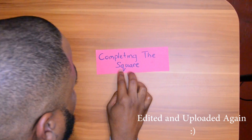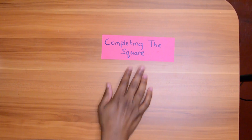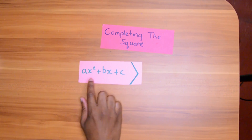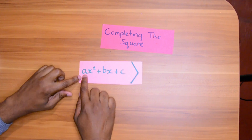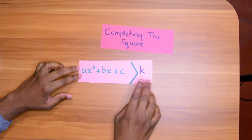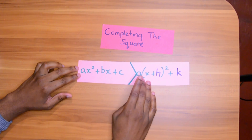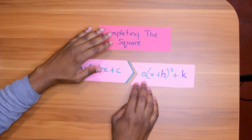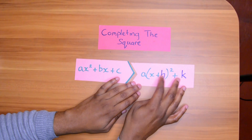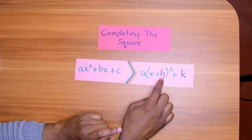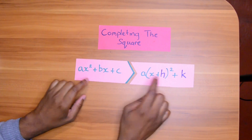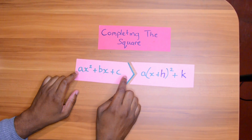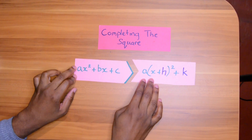Let's look at completing the square. Completing the square is a technique where we change a quadratic equation from the general form — A x squared plus Bx plus C — into the completing the square form: A into x plus h, all squared, plus k. Here, h is a combination of B and A, and k is a combination of A, B, and C. So we change it from this look into this look.